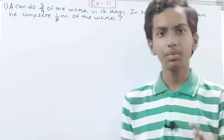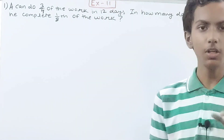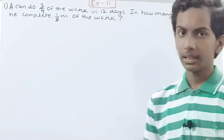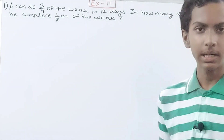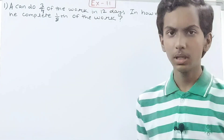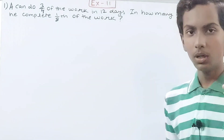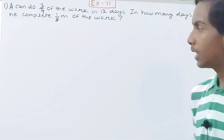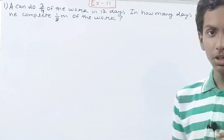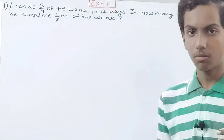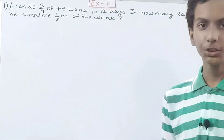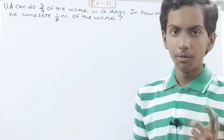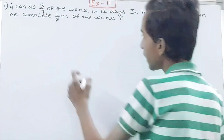So basically this question is saying that there is a person A who has some work to do — let's say he has to lay a wall. Out of that work, three-fourths he can complete in 12 days. So three-fourths of the total work he can do in 12 days. How much time will he take to do one-eighth of the work?